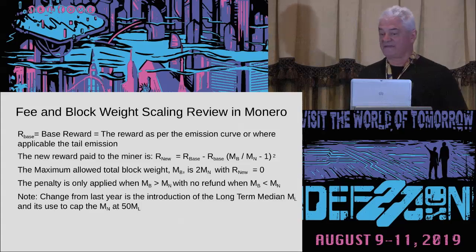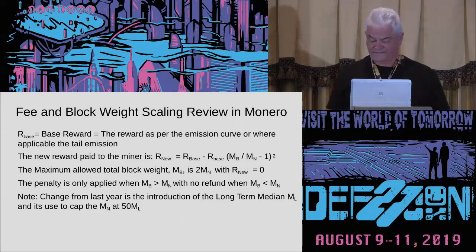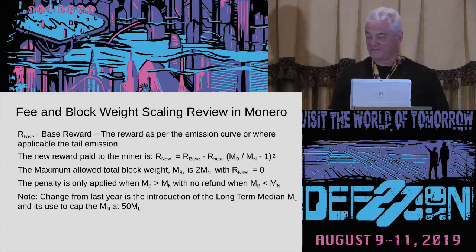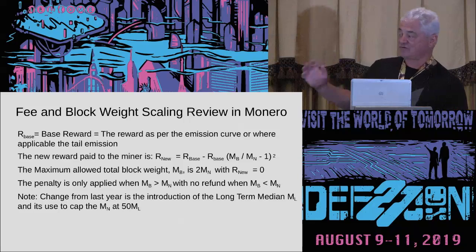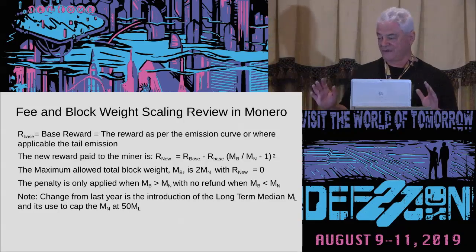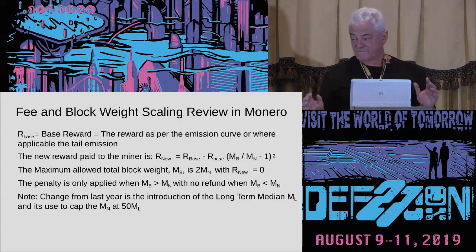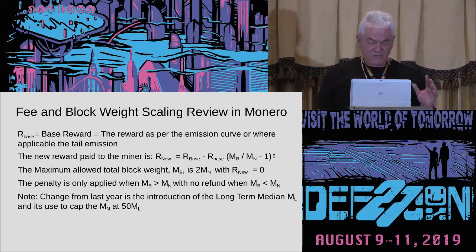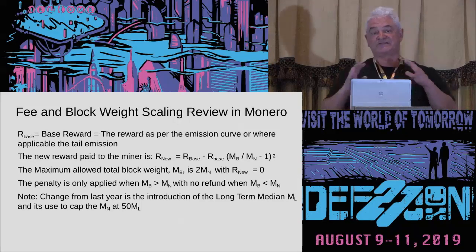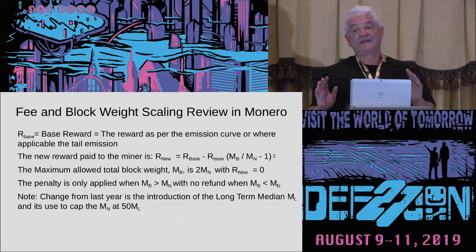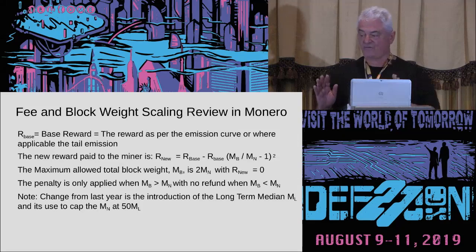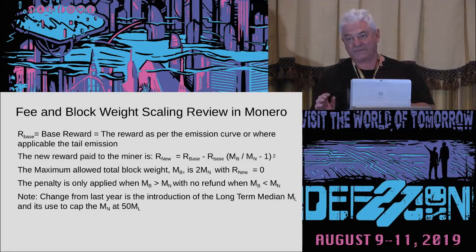We have the base reward, which is basically your block reward, and then we have the reward paid to the miner after taking out this penalty. The maximum allowed total block weight is twice the median, at which point you give up the entire block reward. So if MB equals twice MN, you end up with R_new equals zero — you've given up your entire block reward as penalty by mining a block twice the size of the median. Crucially, the penalty only applies when you mine a larger block; you do not get a rebate for mining a smaller block.